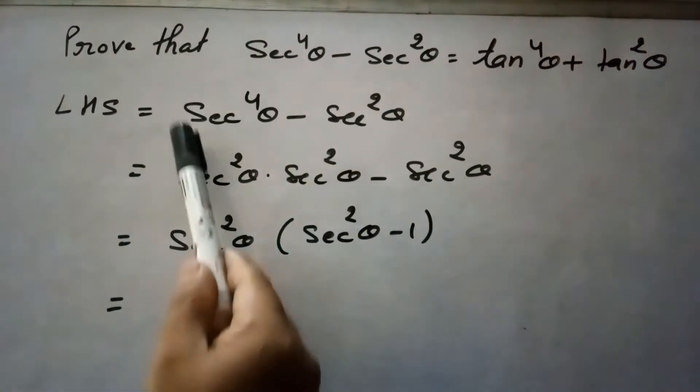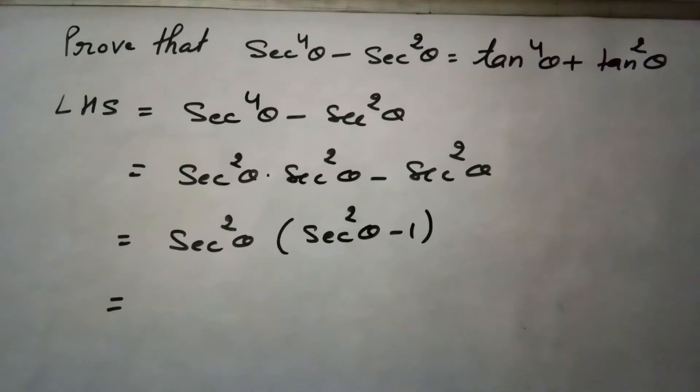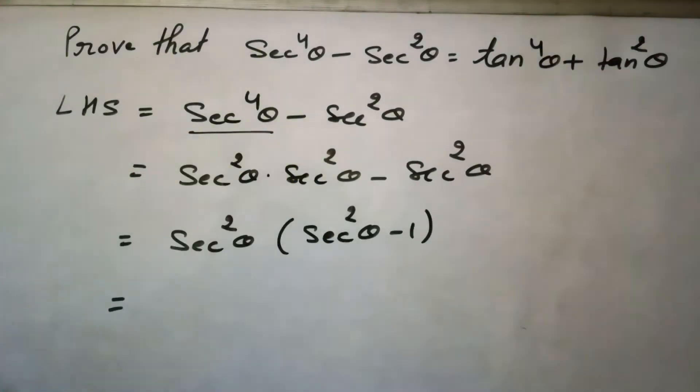So we will start from left hand side, secant 4 theta minus secant square theta. So this secant 4 theta can be written because this is square to square.